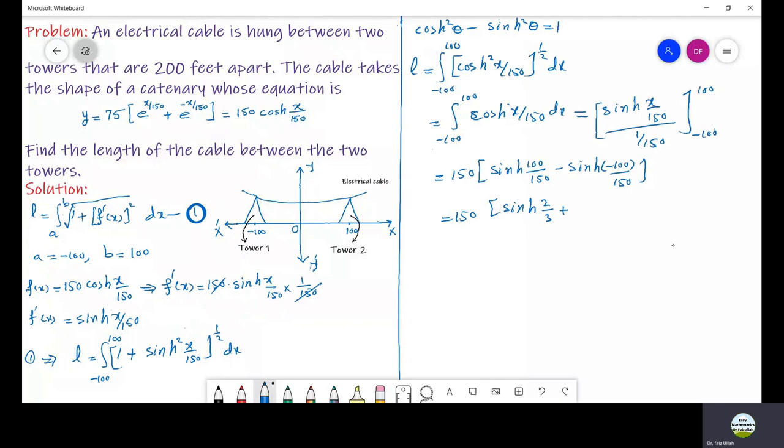If we further simplify this we can get 2 times sinh(2/3) and this can be written as 300 times sinh(2/3).